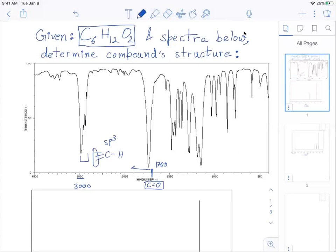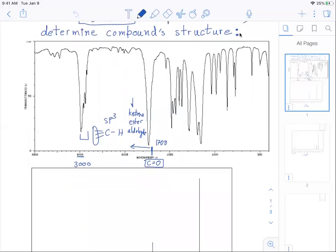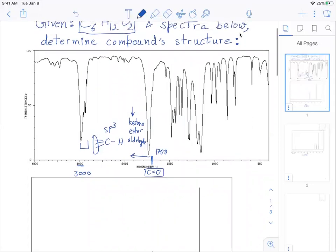Now we do have a peak coming to the left of this which usually could indicate ketone or it could indicate ester or it could indicate aldehyde. Now the ketone, ester and aldehyde they all have very specific signature peaks that we can look for. So usually we figure out if it's a ketone by the process of elimination because ketone doesn't have a specific peak.